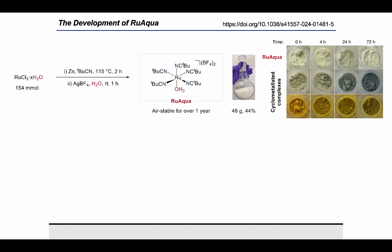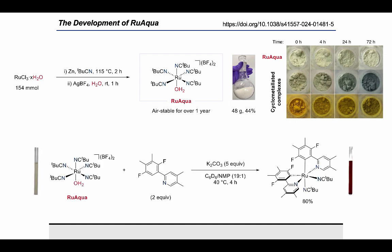The other important attribute of the catalyst is high reactivity, and we examined this following an important stoichiometric reaction by NMR. At just 40 degrees, after four hours we observed 80% conversion to this bis-cyclometalated species shown in the bottom right. We know from previous studies that this is an important intermediate for ortho functionalization procedures.